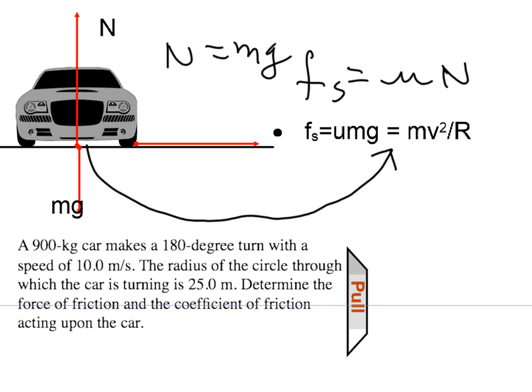So let's take an example. That force of static friction is in fact the centripetal force, so it's equal to mv squared divided by r. Let's take an example of a 900 kilogram car making a 180 degree turn at a speed of 10 meters per second, and the radius of the circle is 25 meters. Determine the force of friction and the coefficient of friction acting upon the car.